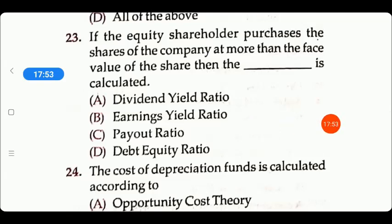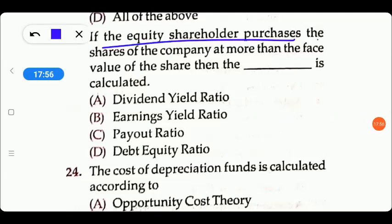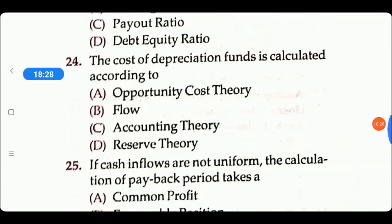Next question: if an equity shareholder purchases shares of the company at more than the face value of the shares, then what is calculated? Options are: dividend yield ratio, earning yield ratio, payout ratio, or debt equity ratio. The right answer is option B — earning yield ratio — to check how much earning was made.